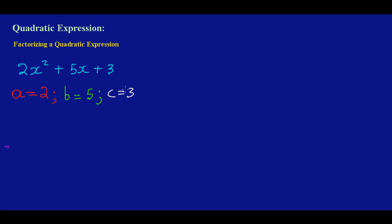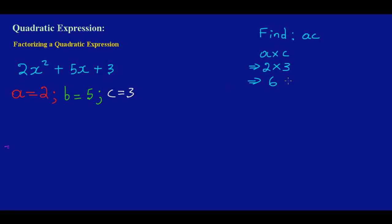Now that I've identified what a, b, and c are, when factorizing the first thing I need to do is find the product of a and c. Product means to multiply, so a times c — substituting, that's 2 times 3 — gives me 6. So my product ac is 6.